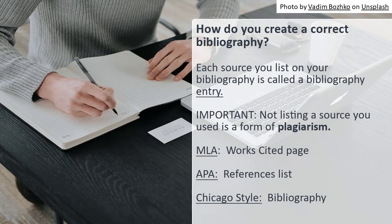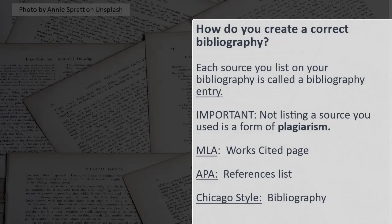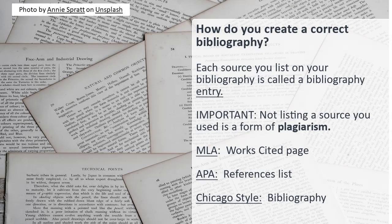Each source you list on your bibliography is called a bibliography entry. Including a bibliography entry for a source allows your readers to know where you found your information and to find that same information if they are interested. What you call your bibliography depends on what documentation format you are using: MLA uses Works Cited Page, APA uses References List, and Chicago style uses Bibliography.